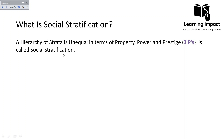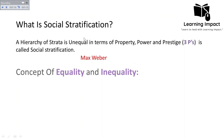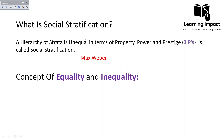This definition — referring to property, power, and prestige — was given by Max Weber. Social stratification is a kind of system in which there is inequality in terms of property, power, and prestige. So what does inequality mean? We will first discuss the concept of how equality and inequality have been defined.